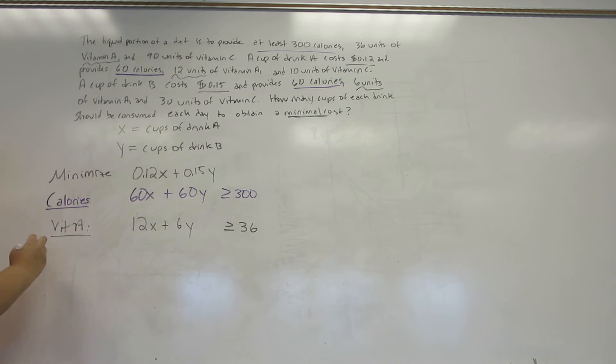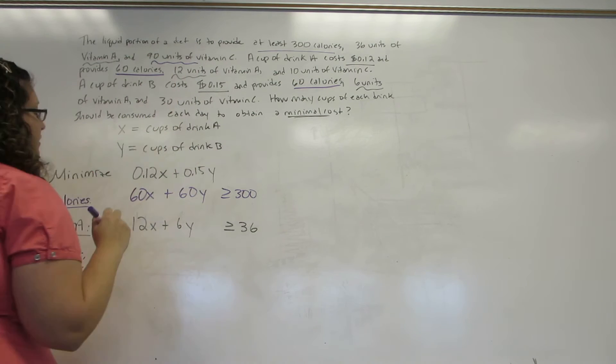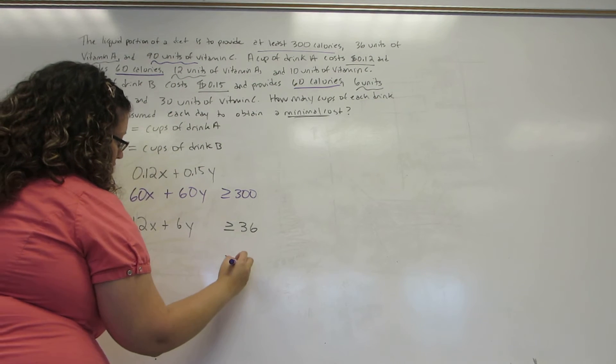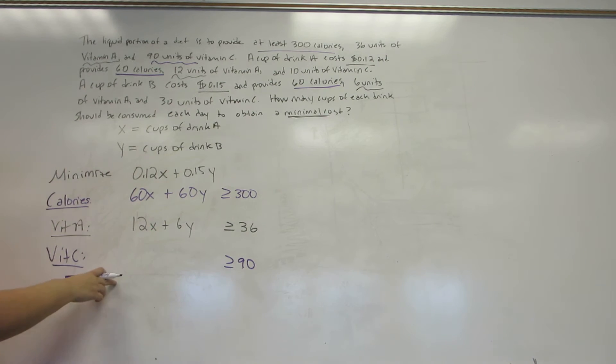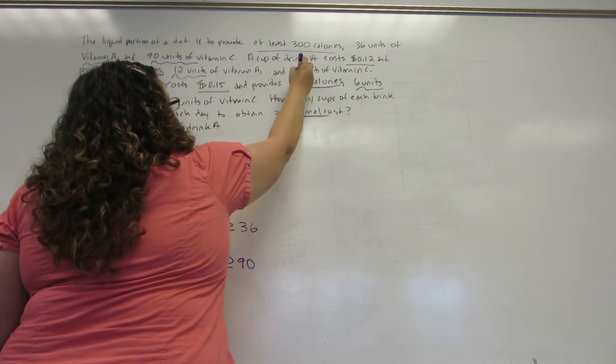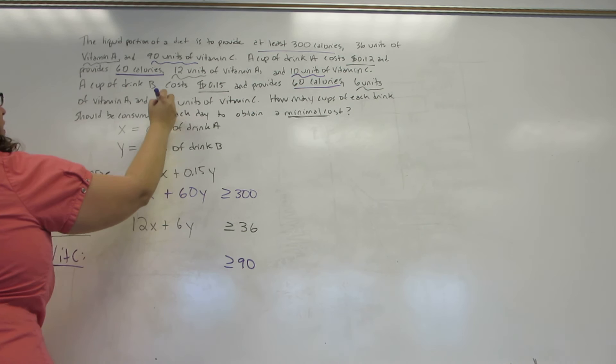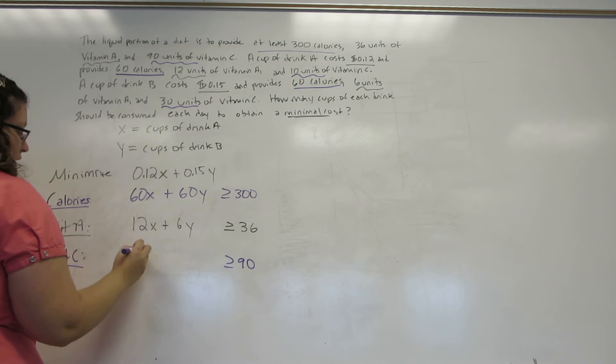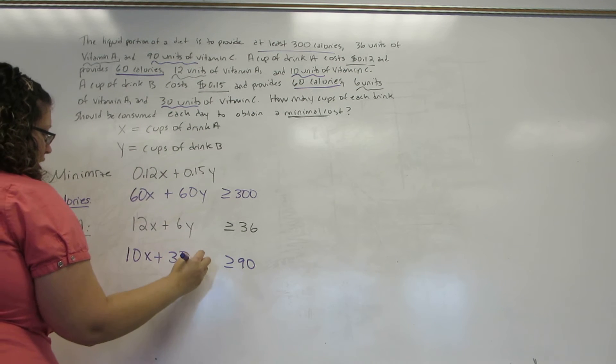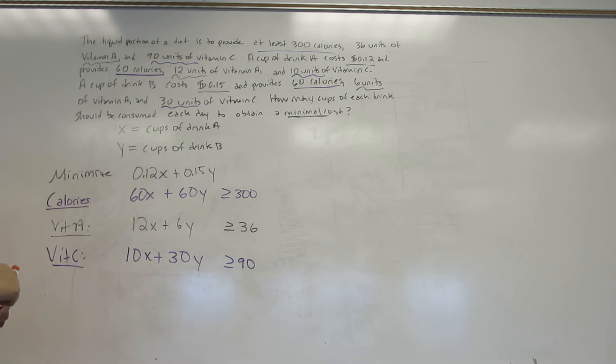The last thing I care about is vitamin C. I need 90 units of vitamin C at least, so greater than or equal to 90. Drink A gives me 10 units, drink B gives me 30. So 10X plus 30Y is greater than or equal to 90.